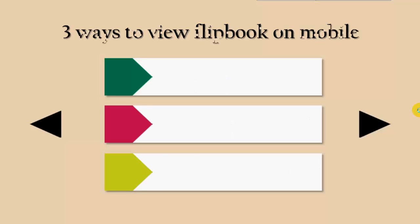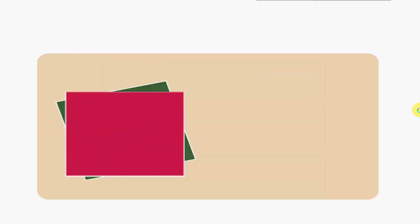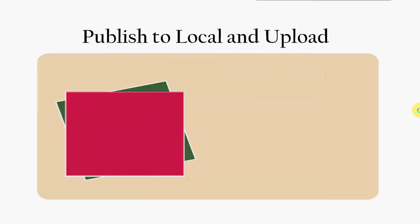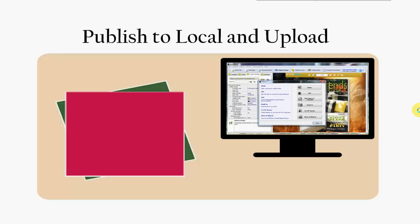There are three ways to view flipbook on mobile devices. Firstly, publish to local and upload. Publish the flipbook offline, and then upload it to your website via FTP.